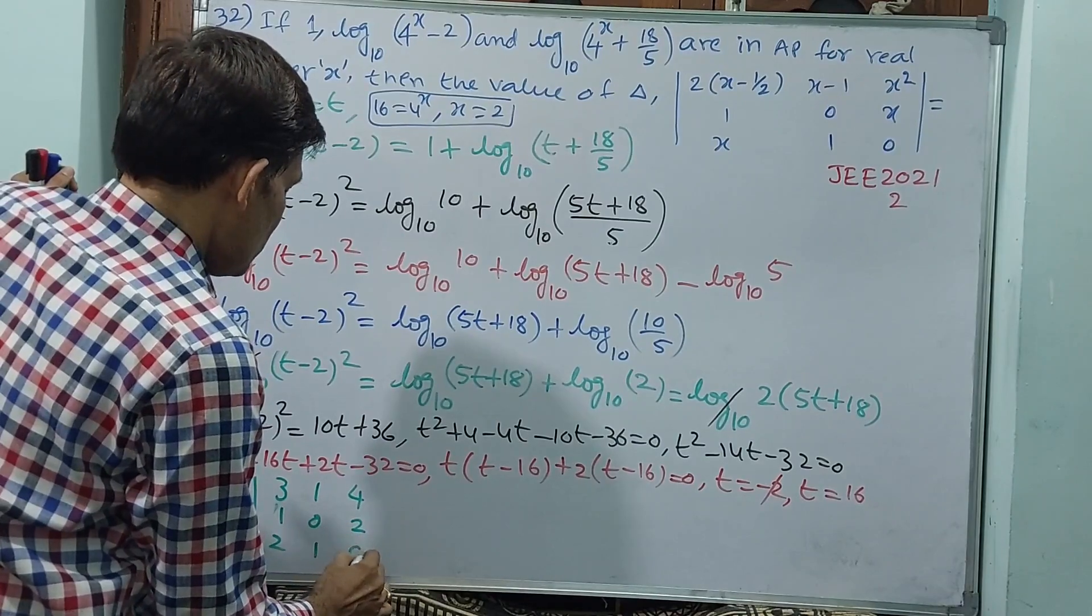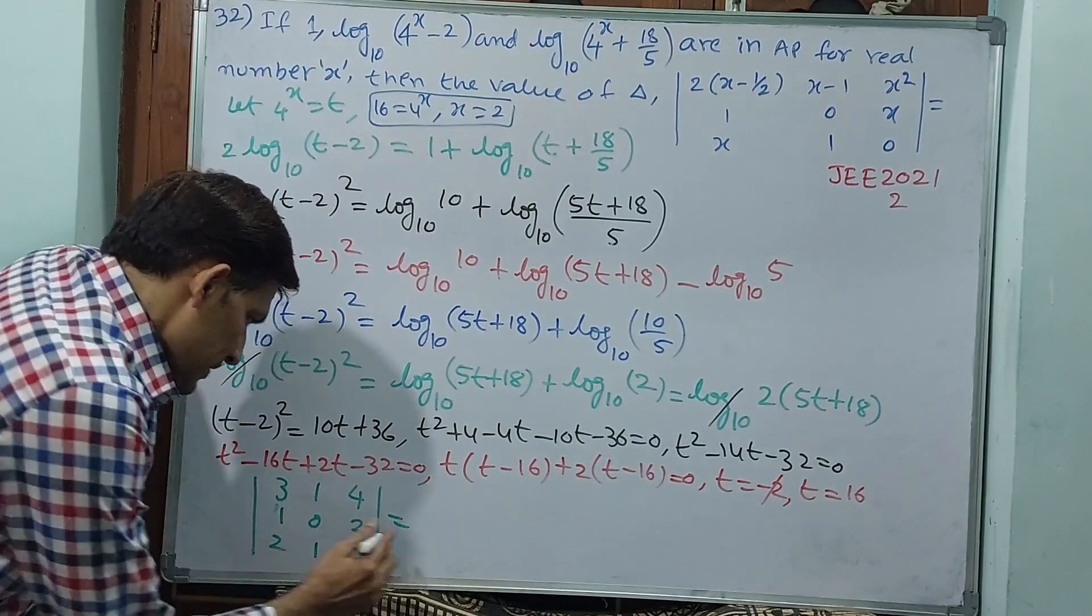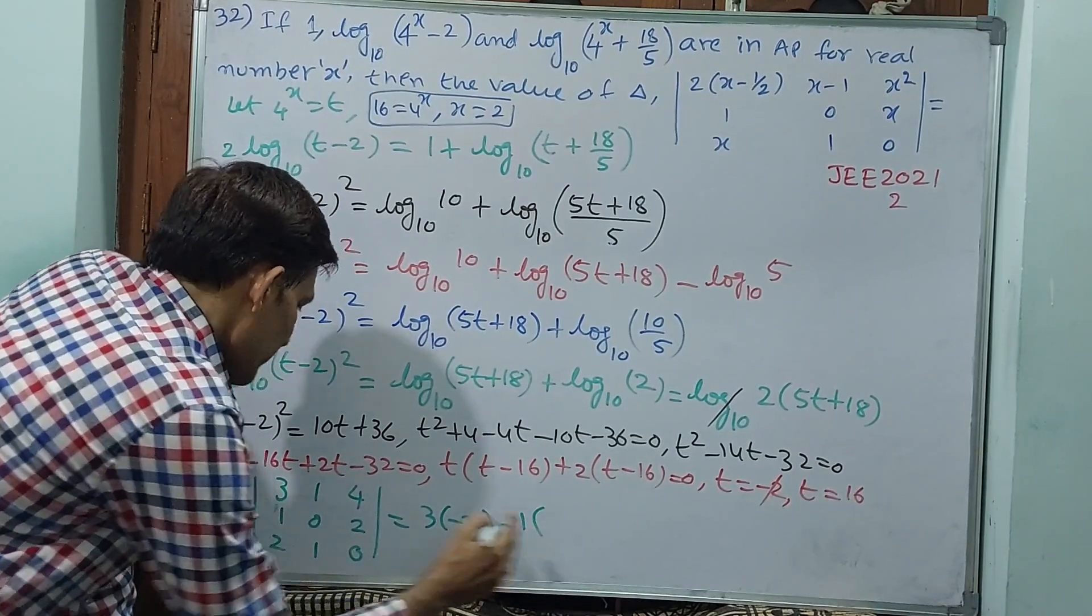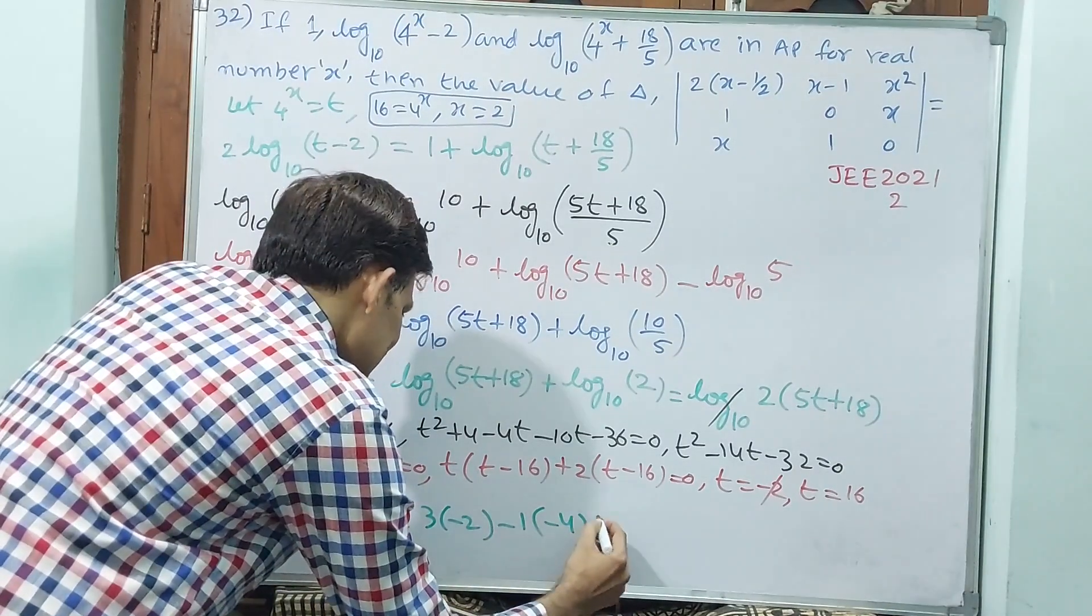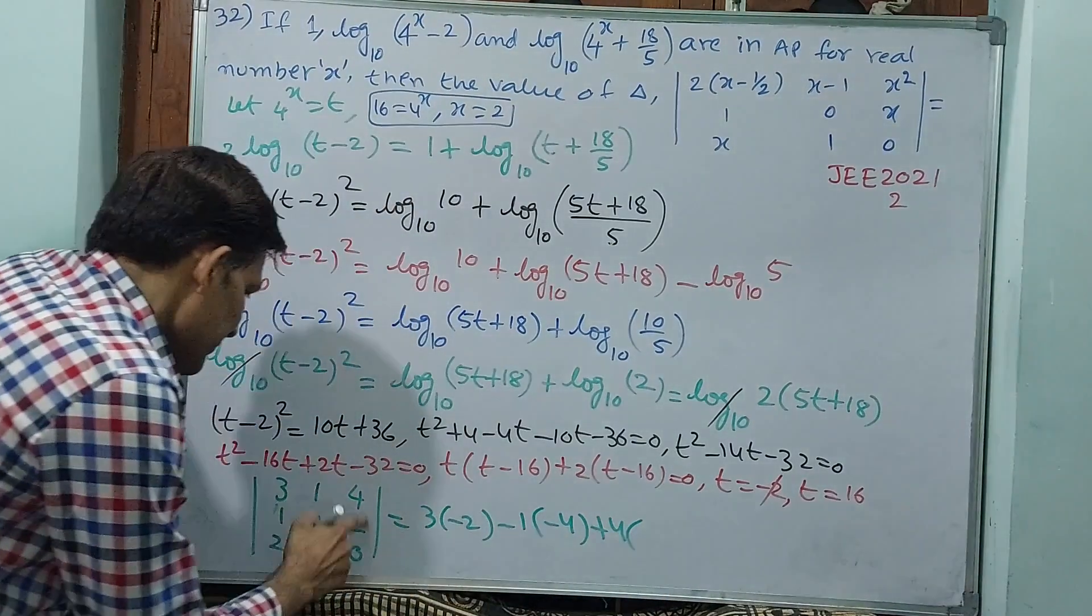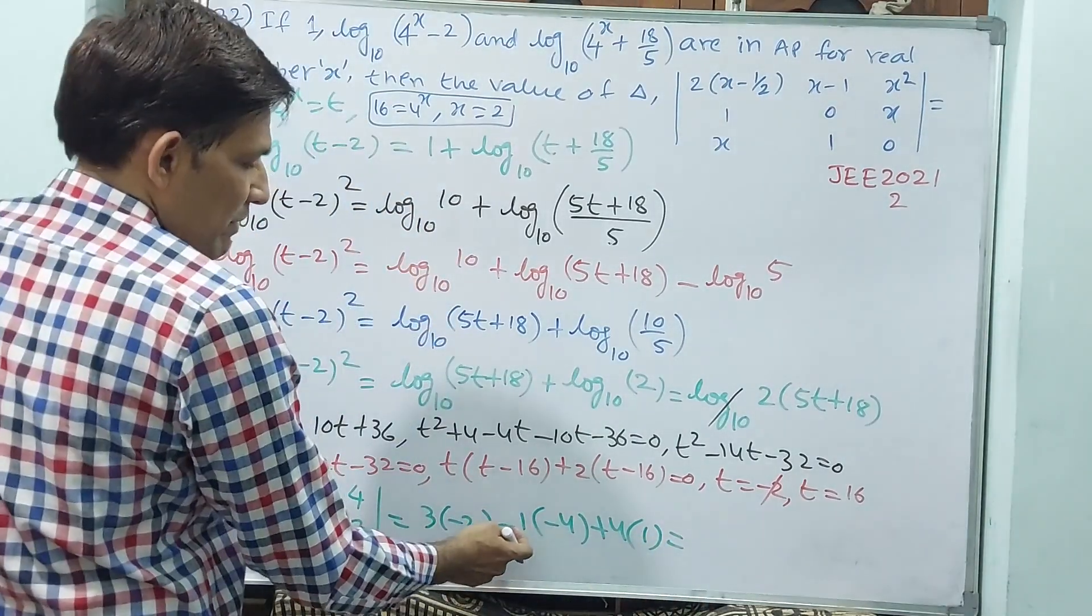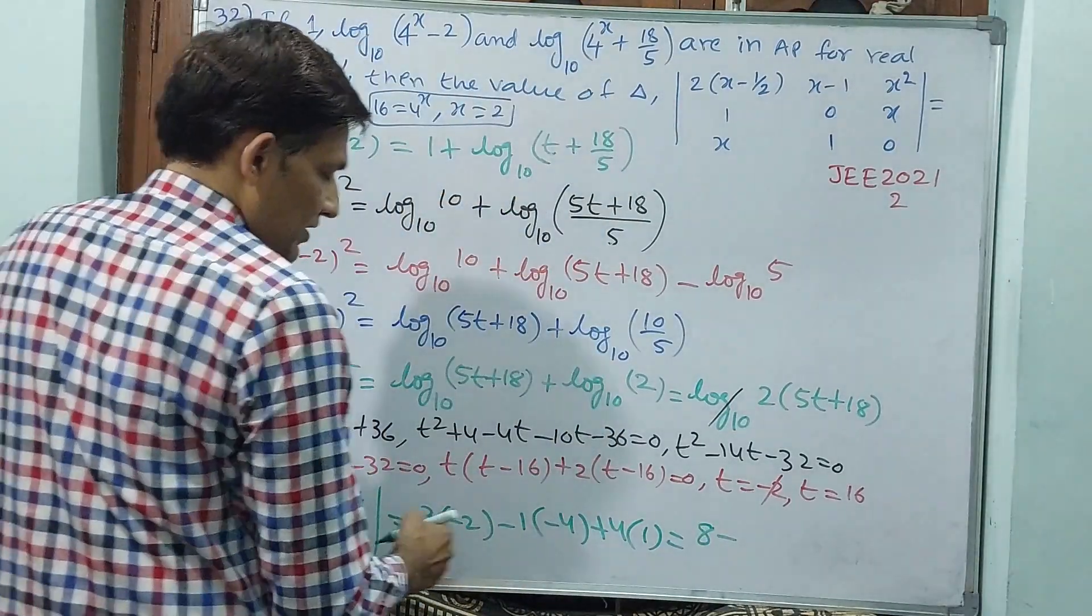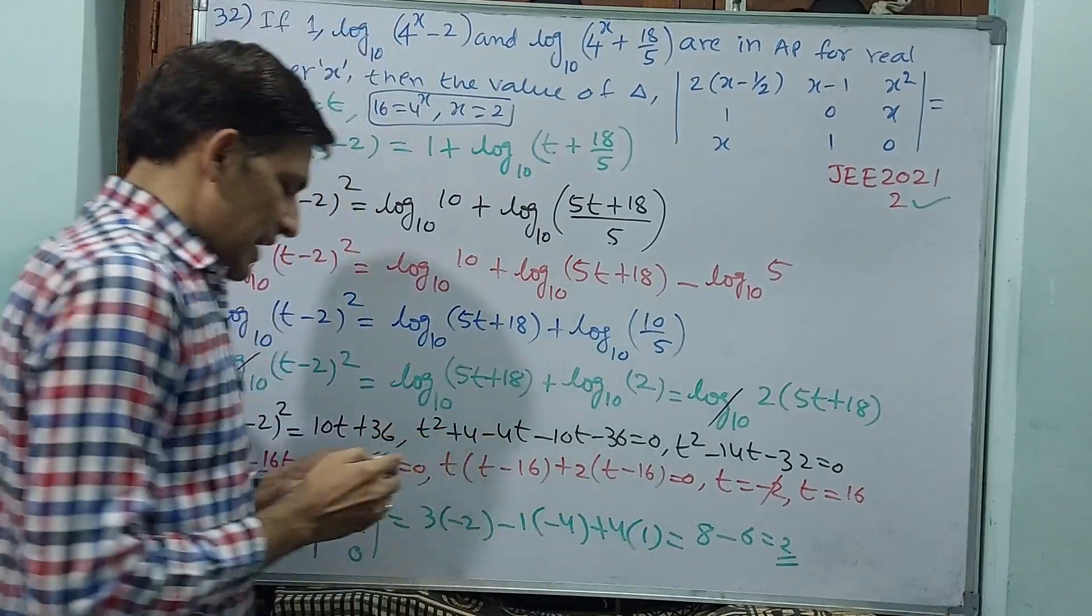That is equal to 3 × (-2) - 1 × (0 - 4) + 4 × 1. That is equal to -6 + 4 + 4. -6 + 4 + 4, 2. 2 will be your answer.